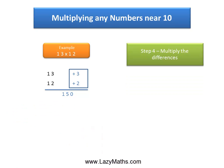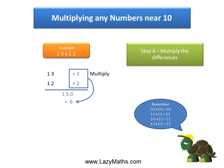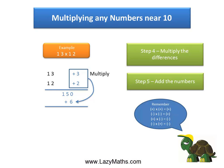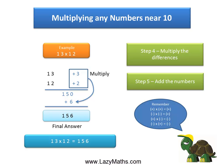The last step is to simply multiply these differences: positive 3 and positive 2 together. Positive 3 times positive 2 gives us positive 6, because positive times positive is a positive answer. Then we simply add 150 plus 6 to get 156 as our final answer. So, 13 times 12 equals 156.